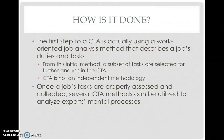How is it done? There are several steps involved in conducting a CTA, but the first step is actually utilizing another type of analysis — a work-oriented job analysis that describes a job's duties and tasks. It's important that this step is done prior to the cognitive task analysis so that information relating to the tasks of a job is already understood and available to the analyst, to guide what kind of questions are going to be asked of an expert's thought processes. From the initial work-focused job analysis, one will choose a subset of tasks for further analysis in the CTA.